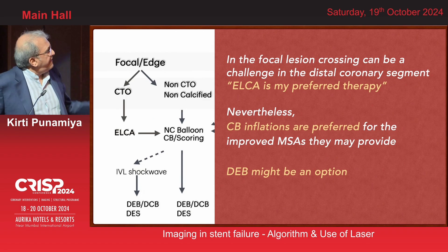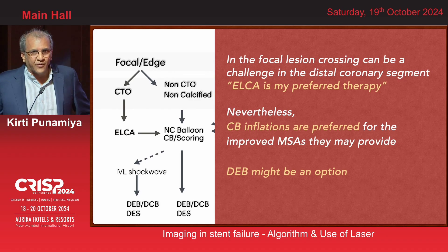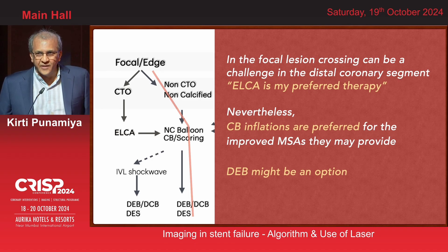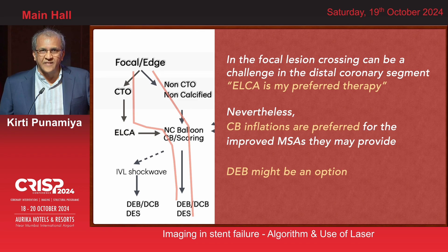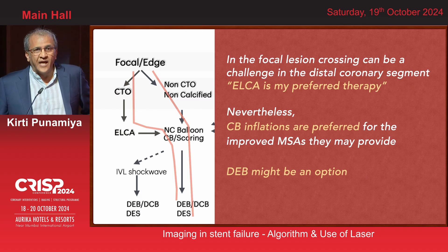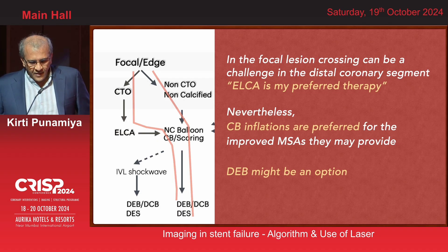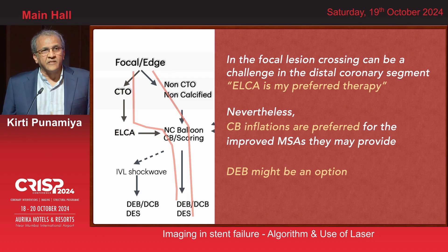When you look at focal ISR, you have options based on whether it's bifurcation, CTO or non-CTO, calcified or not. The simplistic path is cutting balloon, scoring balloon, or NC balloon to dilate, then either a drug-eluting balloon or a stent. In cases where the lesion is uncrossable, ELCA can be used to gain entry before following the same path. ELCA is my preferred strategy today for focal lesions. Cutting balloon inflations are preferred to improve minimum stent area over routine balloons, supported by data from small studies. Drug-eluting balloons may be an option in certain cases.